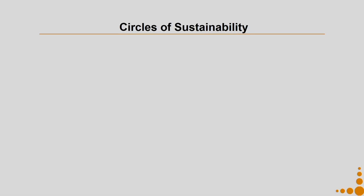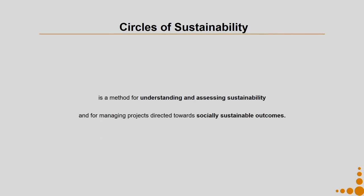So, what is Circles of Sustainability? It is a method for understanding and assessing sustainability and for managing projects directed towards socially sustainable outcomes. That socially sustainable outcomes part is very important. The method is mostly used for cities and urban settlements, because cities and urban settlements are made up of human beings who populate those cities and make them the way they are. Hence, in order to achieve sustainable outcomes, the social dimension is very important.